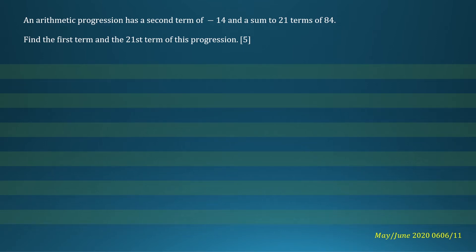Hi everyone, we have an arithmetic progression which has a second term of negative 14 and a sum to 21 terms of 84. Find the first term and the 21st term of this progression.